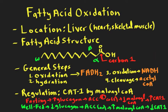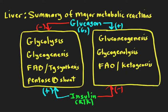Before we go into the details, let's take a look at the big picture. Thinking about the liver, we can see that fatty acid oxidation is occurring along with all the other reactions during the fasting state. When you're fasting, you've got lots of glucagon. Glucagon is turning on gluconeogenesis and glycogen breakdown. We also have fatty acid oxidation revved up, as well as ketogenesis.